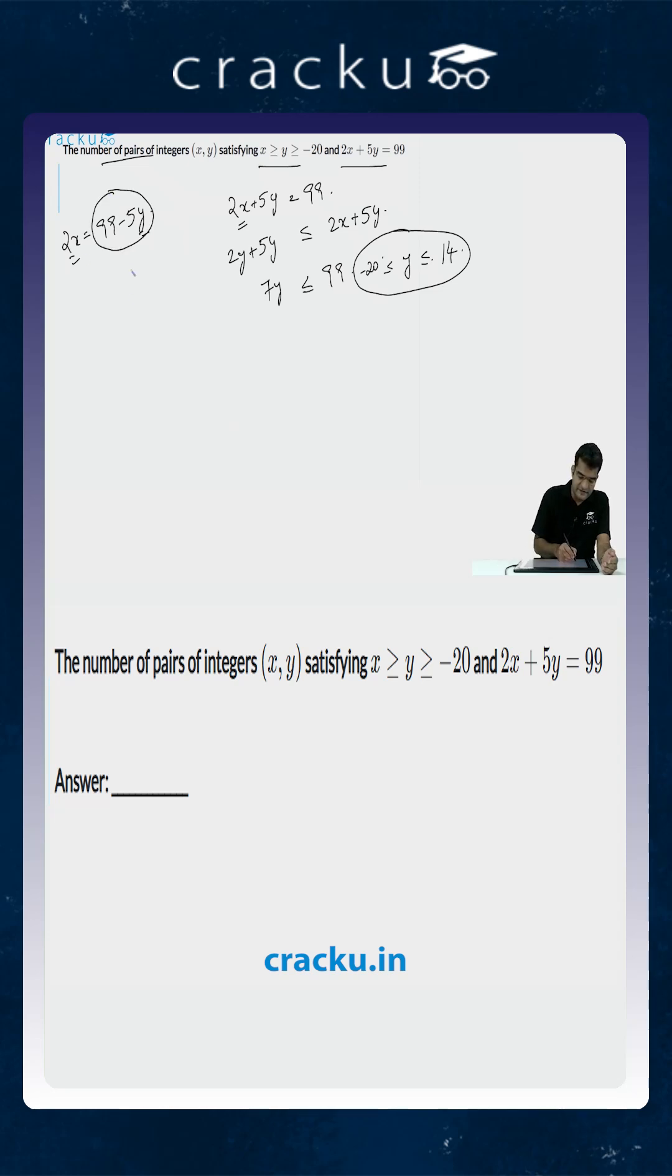So you want 99 minus 5y to be even therefore 5y has to be odd or y itself has to be odd.